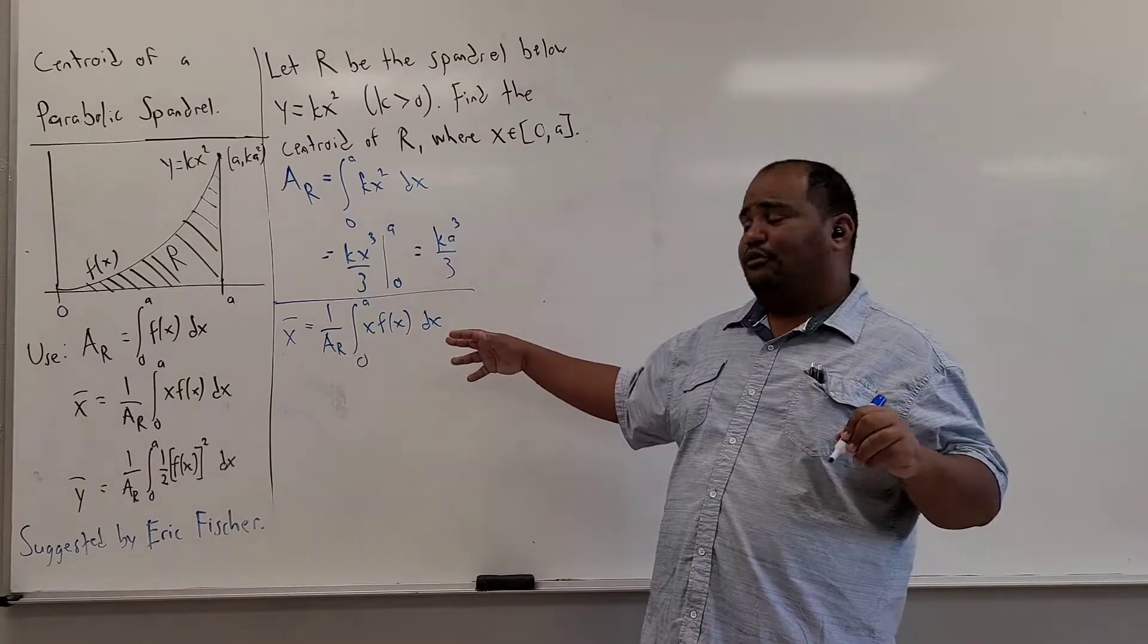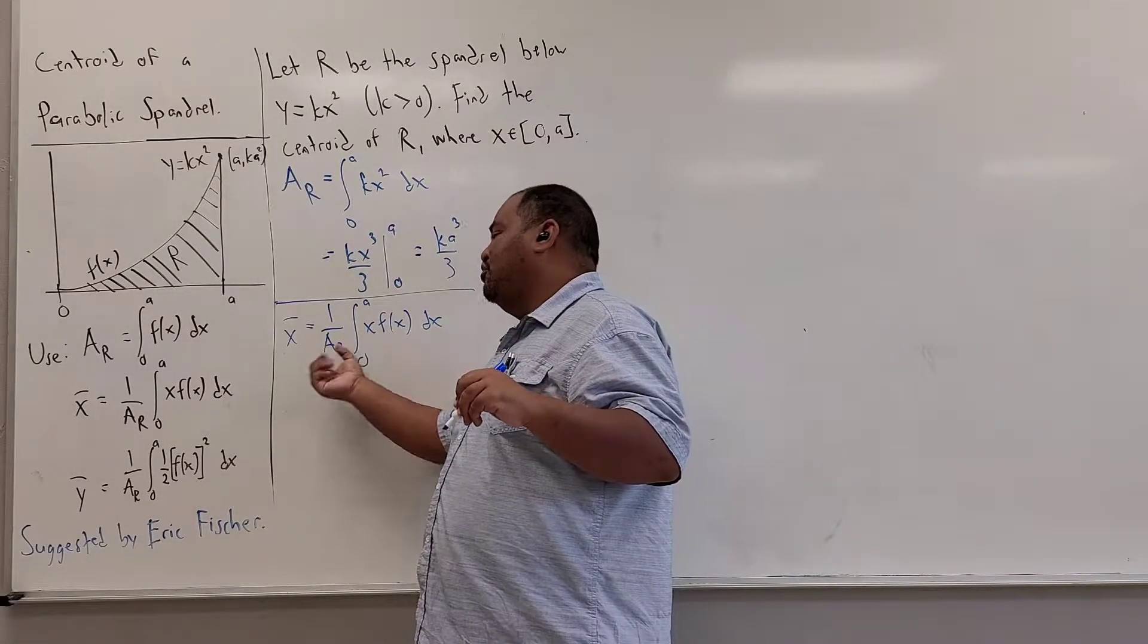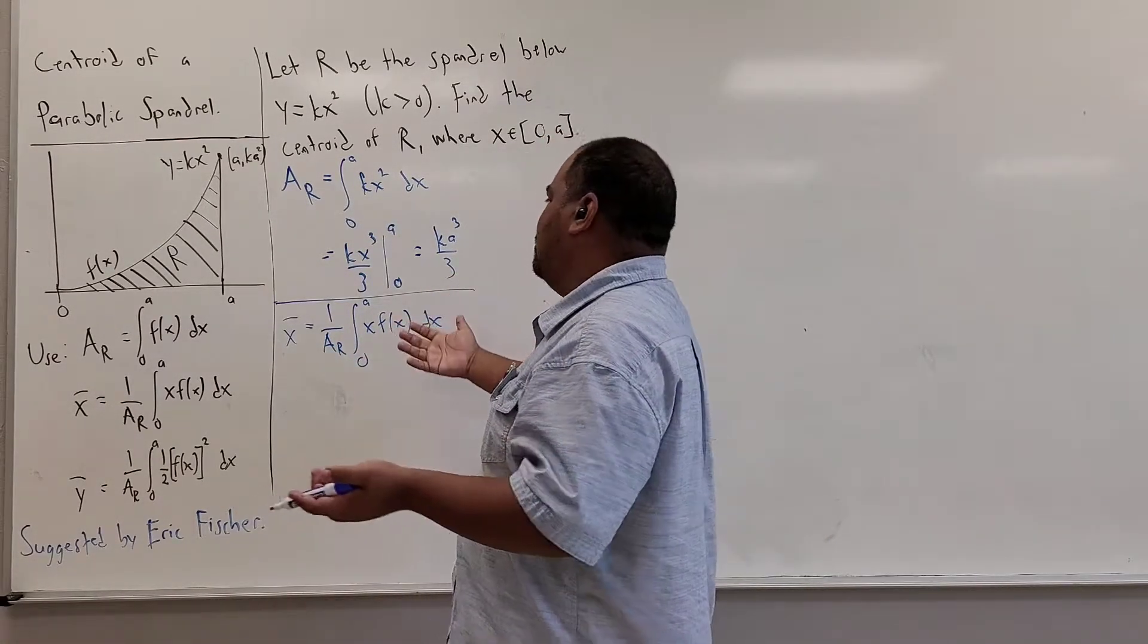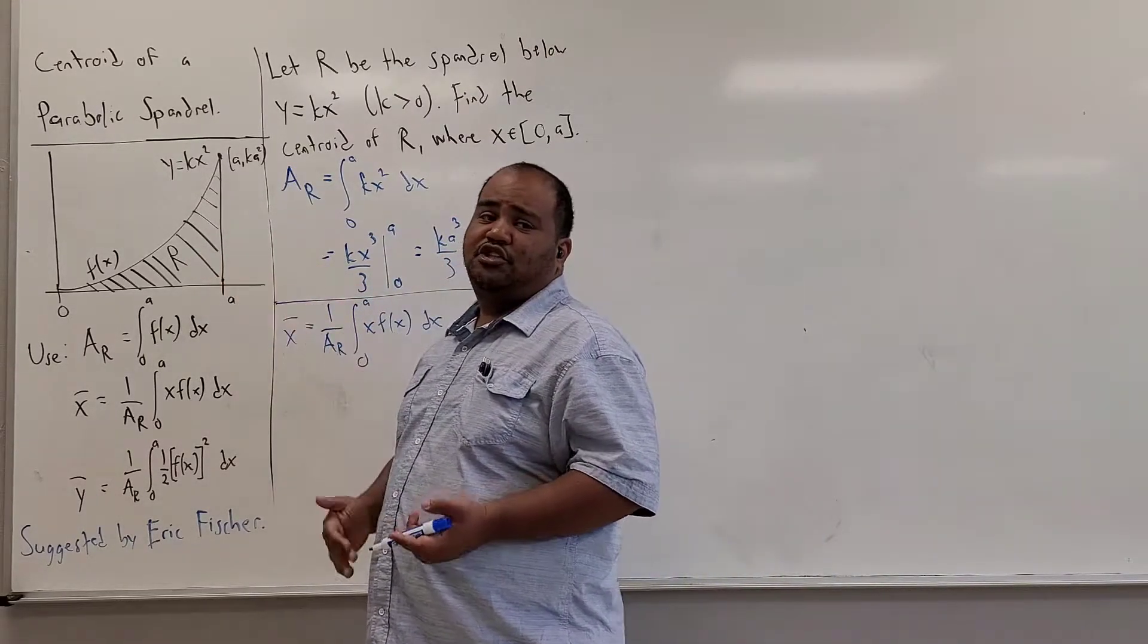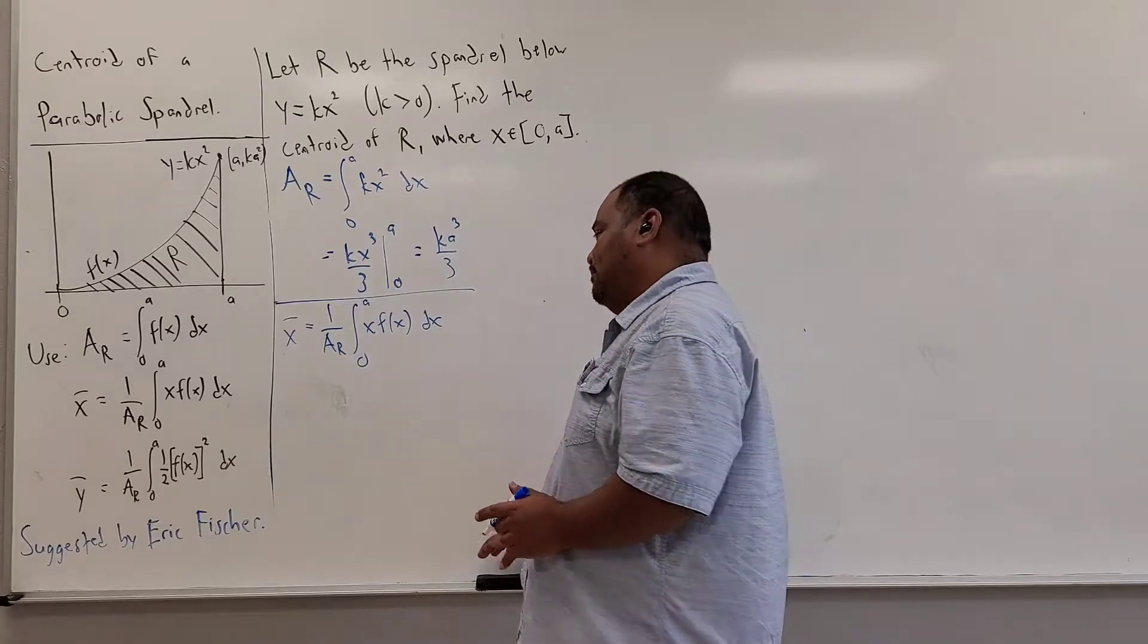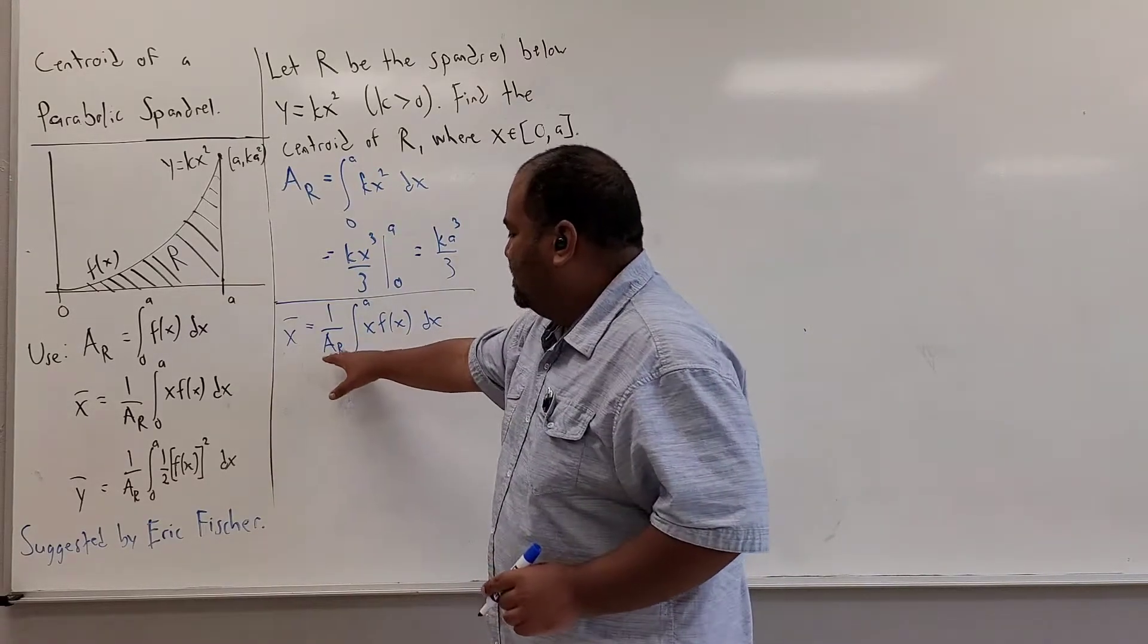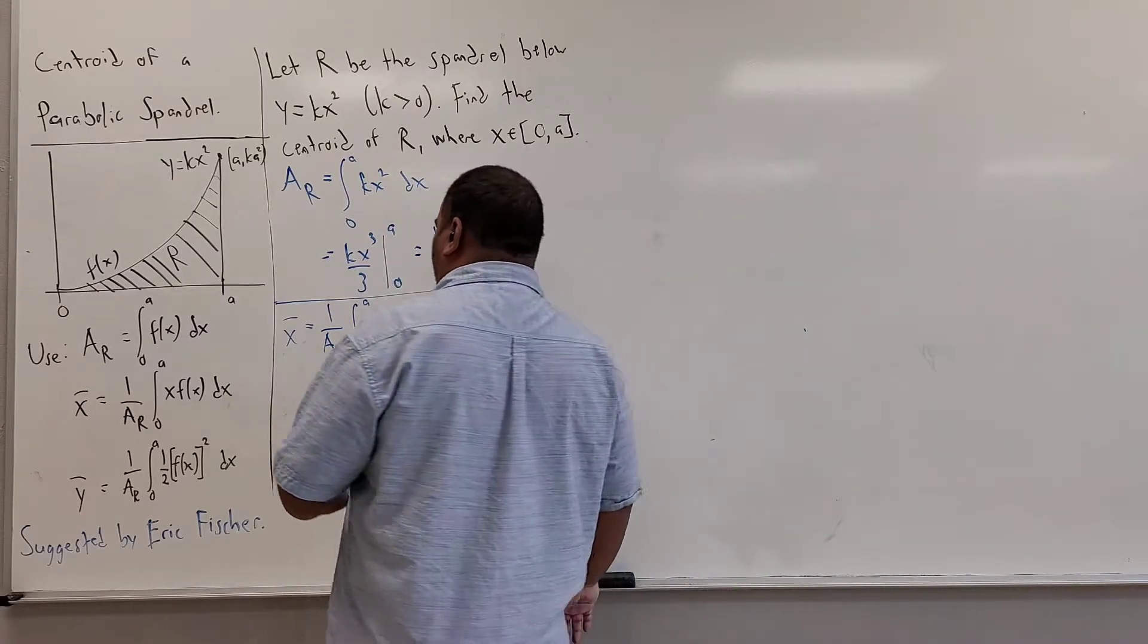You can interpret this as, say for example, a mass per unit area here. Of course, we're not worrying about the density of the object here. We're assuming that this has uniform density, just so the computations don't get too messy. So once I have this here, I'm going to replace all the things I know.